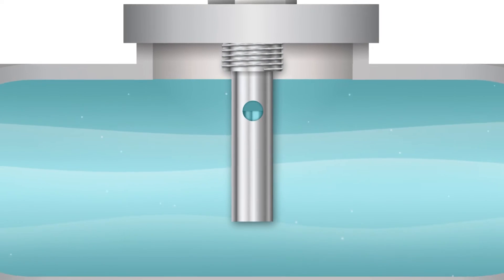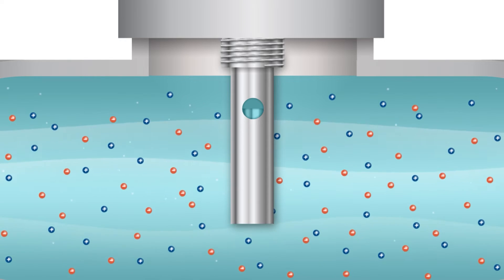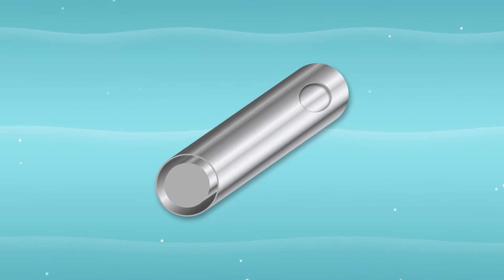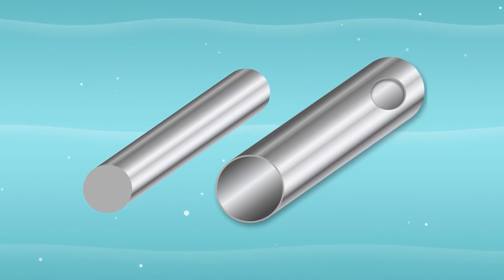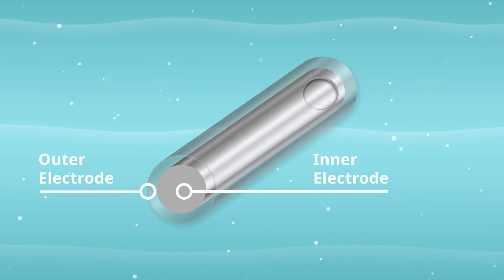The most common method for inline conductivity measurement in clean and non-corrosive water is contacting conductivity. Contacting conductivity sensors feature two electrodes that directly touch or contact the process fluid. The outer electrode is a hollow cylinder and the inner electrode is a rod made of conductive material.